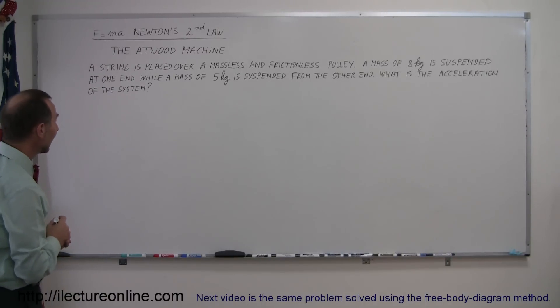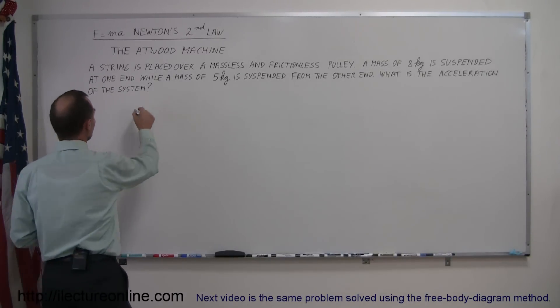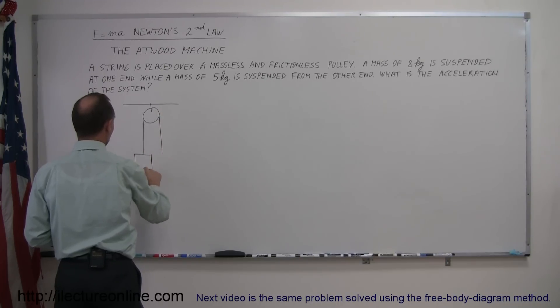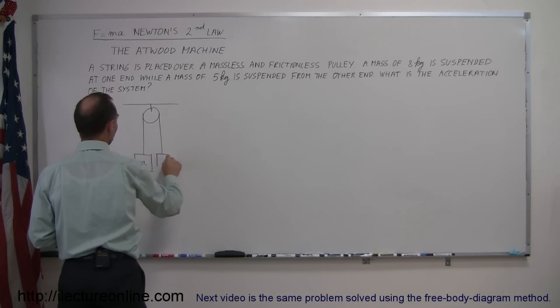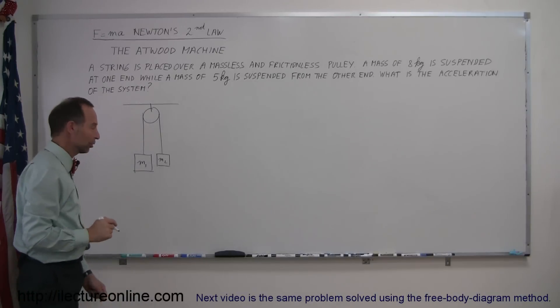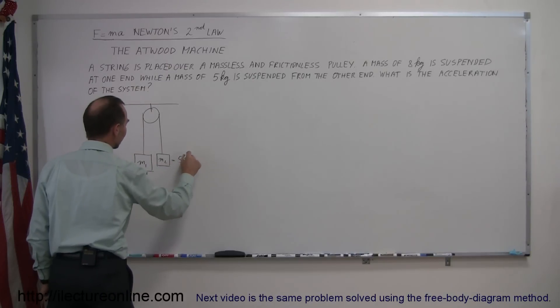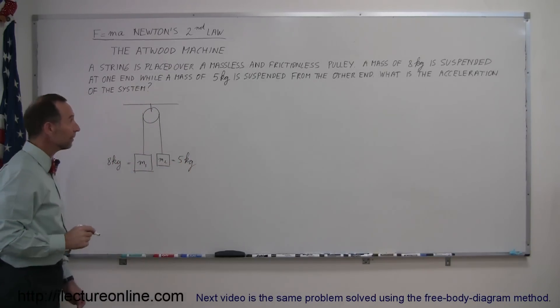Let's go ahead and make a little drawing of that. So let's say we have a ceiling, from the ceiling we suspend the pulley, and then we put a string over the pulley, and at one end we'll put a mass, let's call it mass 1, and at the other end let's have another mass called m2. You can see mass 1 is bigger than m2, so let's say mass 1 is equal to the 8 kilograms listed, and here mass 2 is equal to the 5 kilograms.